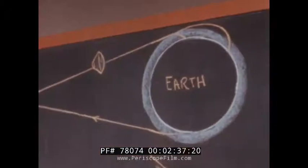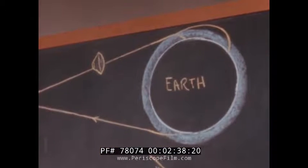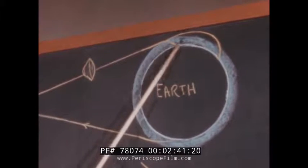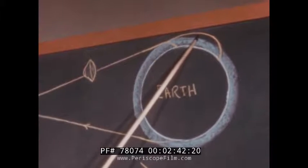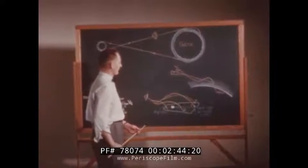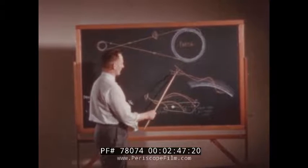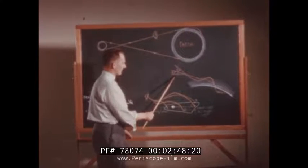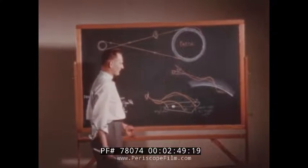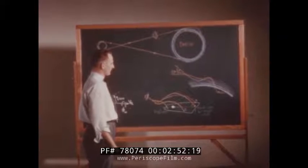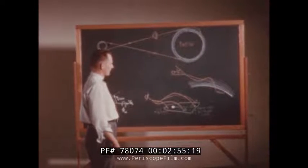Mid-course guidance is assumed to correct the vacuum perigee altitude before re-entry occurs so that the flight path angle at re-entry falls within tolerable limits. Similarly, mid-course guidance is assumed to correct trajectory plane errors so that the heading angle at re-entry falls within tolerable limits.